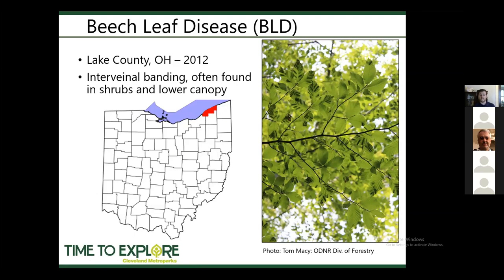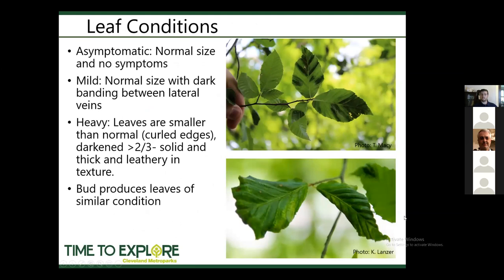BLD was first found in Lake County, Ohio in 2012. You can see dark interveinal banding patterns in leaves that are often found first in shrubs or the lower canopy. We start with asymptomatic, healthy normal beech leaves — very light green, thin, very papery. When BLD symptoms appear, mild symptoms show normally-sized and shaped leaves, but with this dark interveinal banding pattern developing.